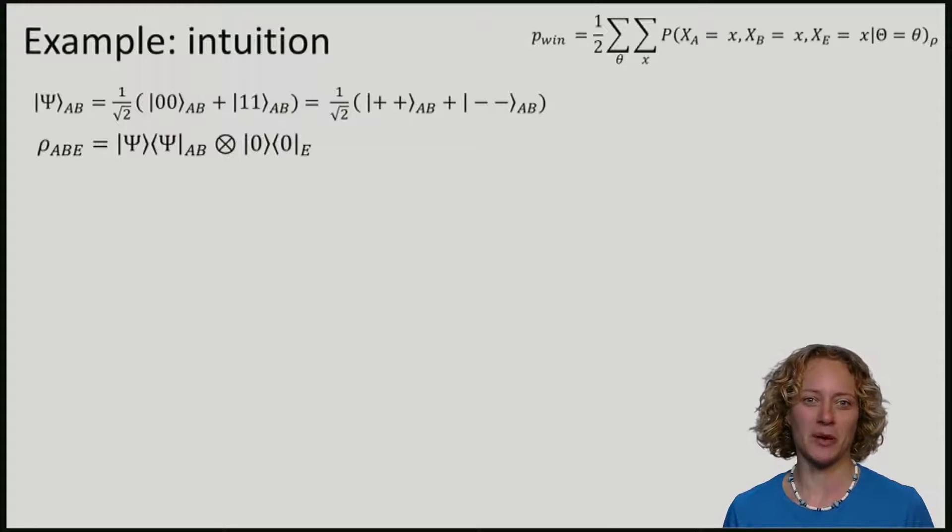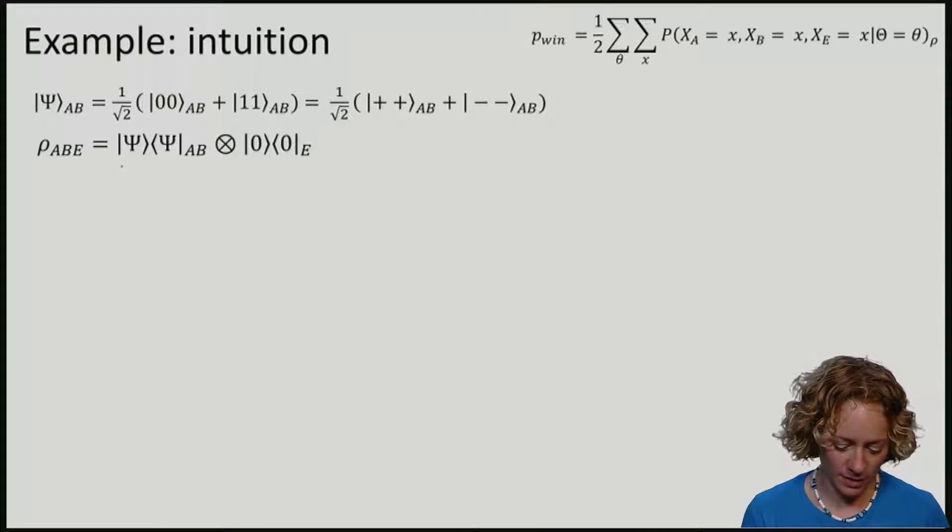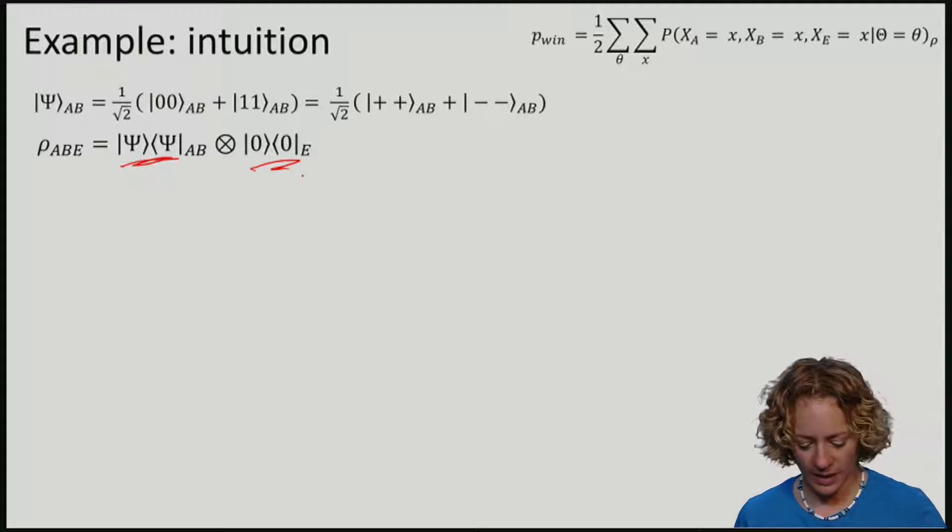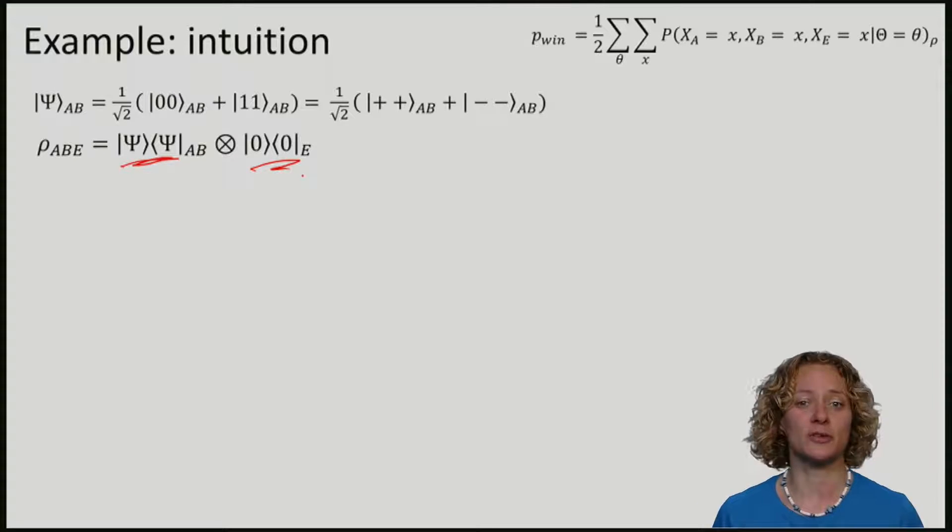Let's now consider an example. In this example, Alice and Bob share the maximally entangled state, and the system E is in the state zero.